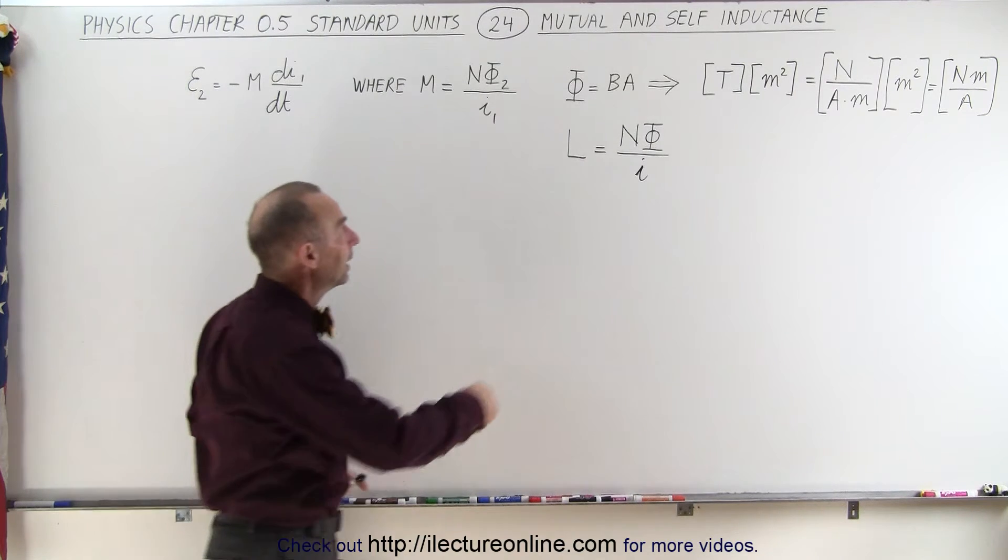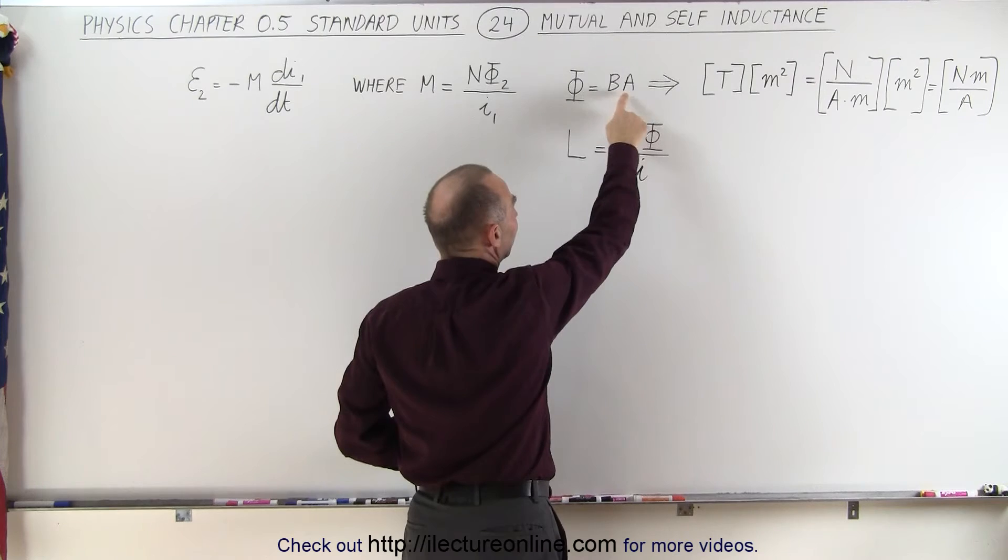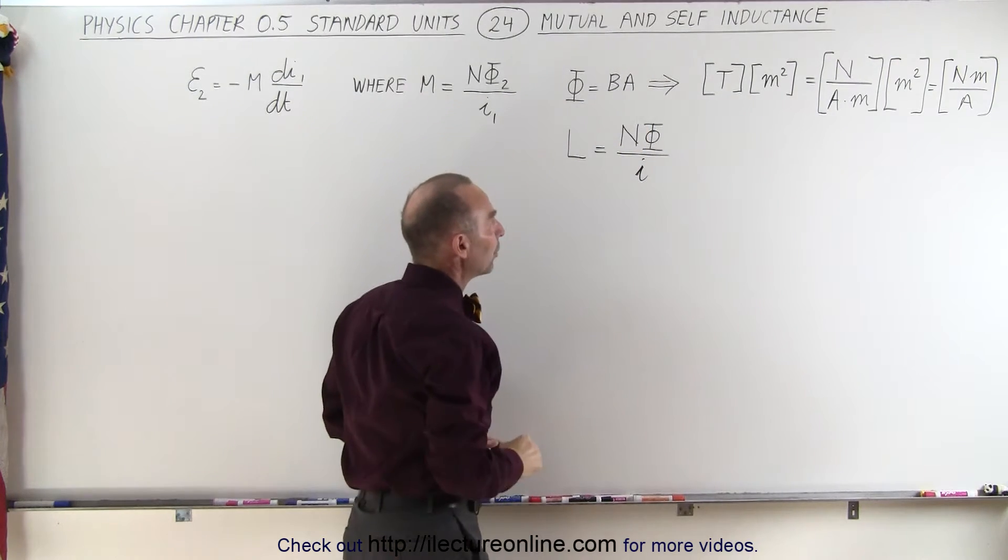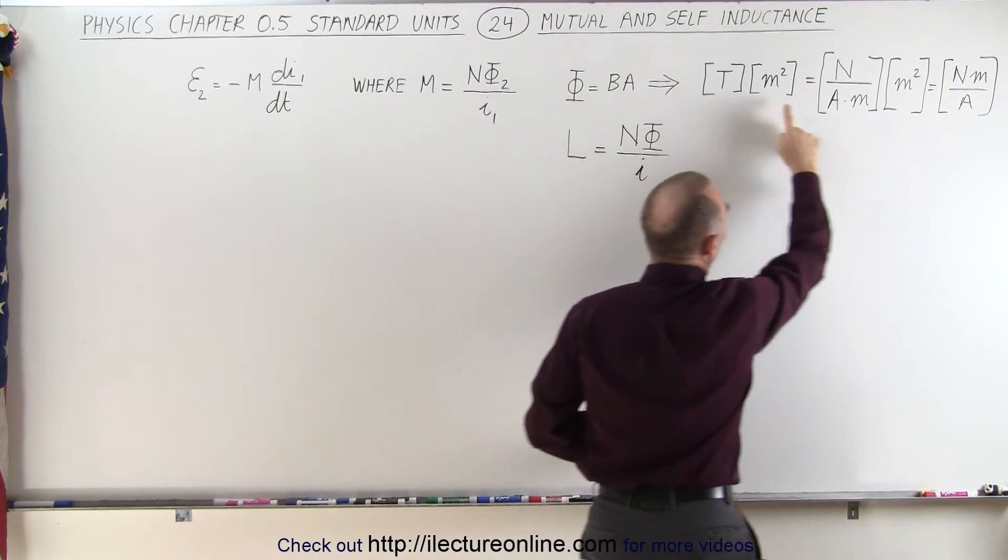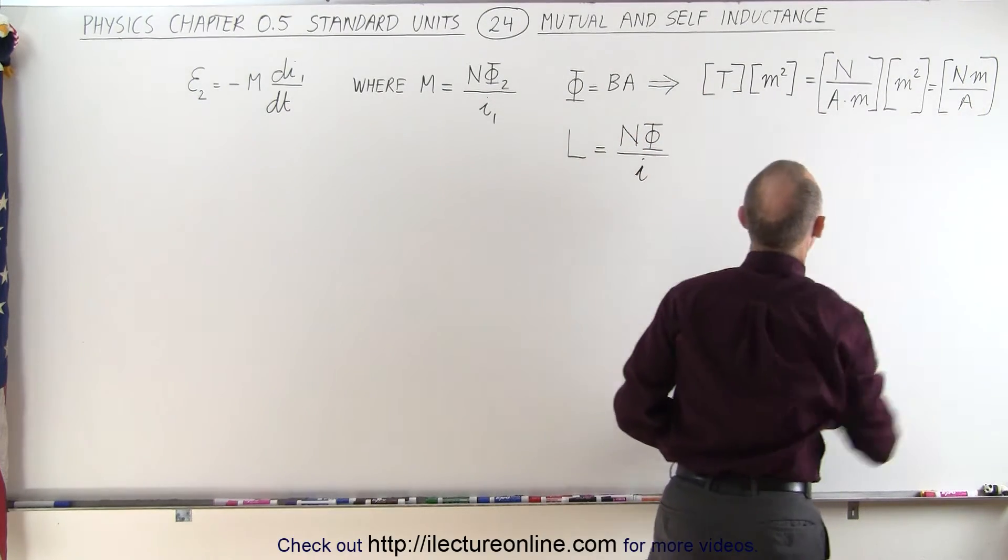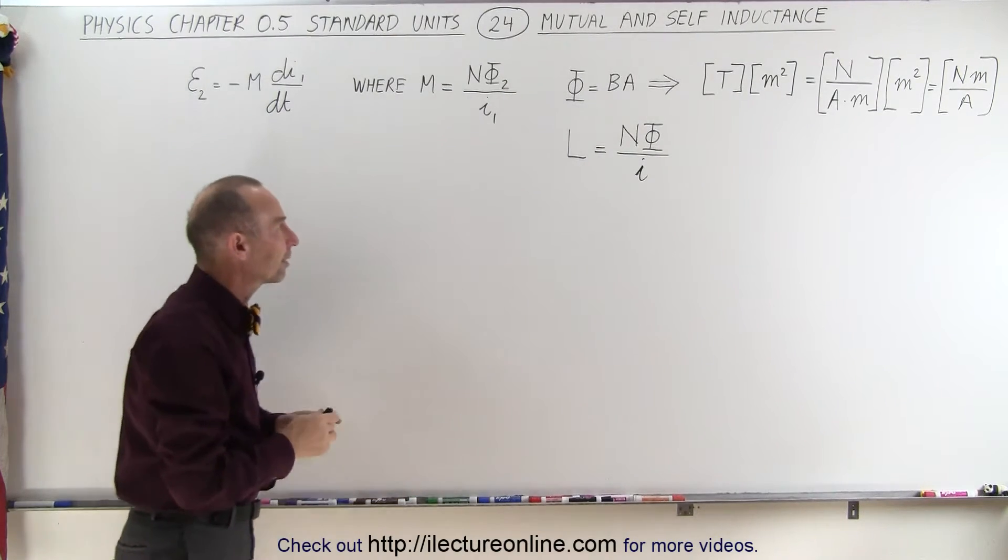We also remember that the magnetic flux is equal to the product of the magnetic field and the cross-sectional area. And we know that the units for magnetic field is Teslas, cross-sectional area is meters squared. So we end up with newton meters per amp for the units, the standard units for flux, magnetic flux.